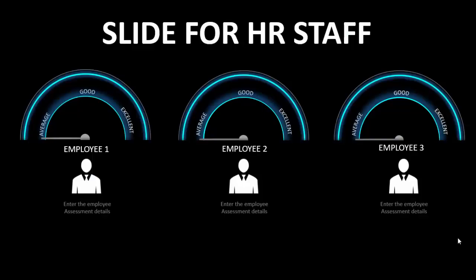In today's tutorial I am going to show you a very useful slide for HR staff. As you can see, I have displayed the information of three employees with a speedometer on top which says Average, Good, and Excellent — useful for assessing employees after three months of probation.